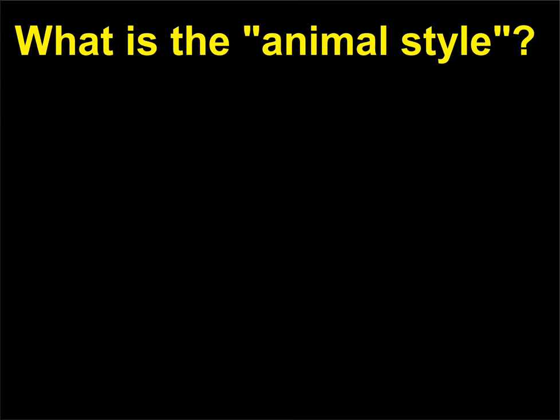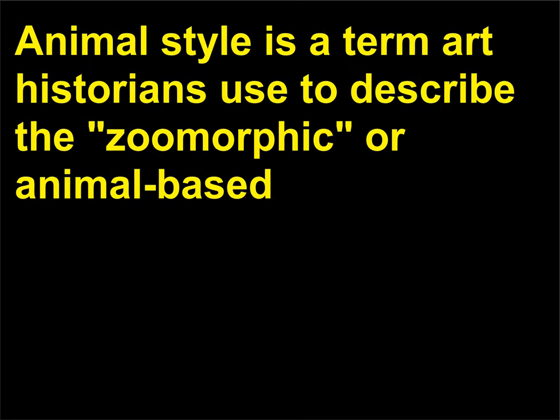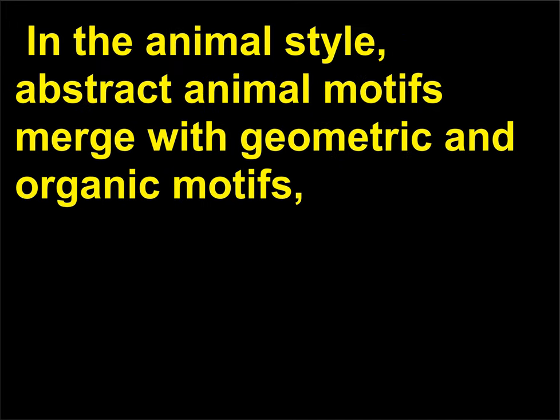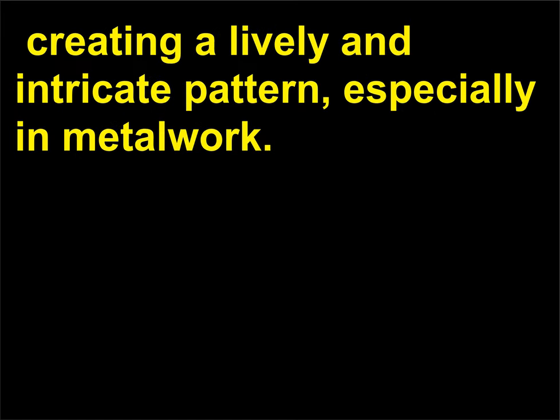What is the animal style? Animal style is a term art historians use to describe the zoomorphic, or animal-based, design motifs popular among Anglo-Saxon artisans during the medieval period. In the animal style, abstract animal motifs merge with geometric and organic motifs, creating a lively and intricate pattern, especially in metal work.